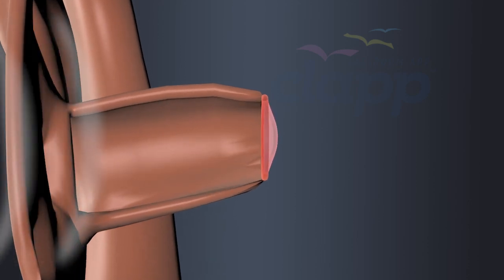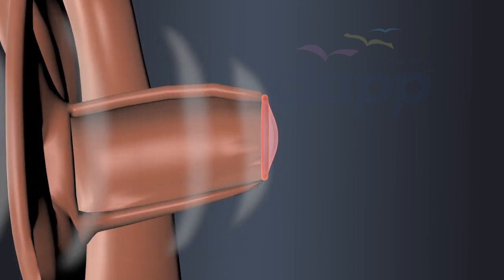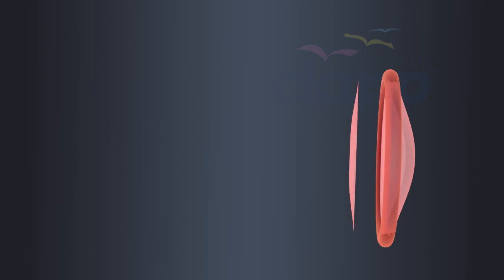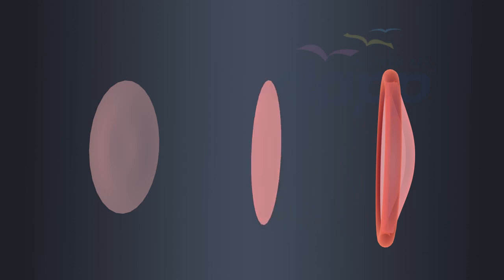Tympanum vibrates in resonance with sound waves. It is a delicate cone-shaped membrane composed of three layers: the outer layer facing the auditory canal, a middle fibrous layer, and an inner mucosal layer facing the middle ear.